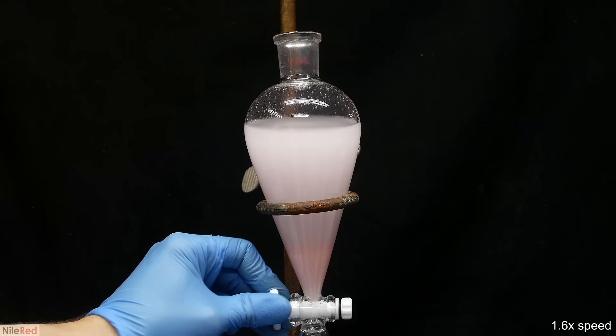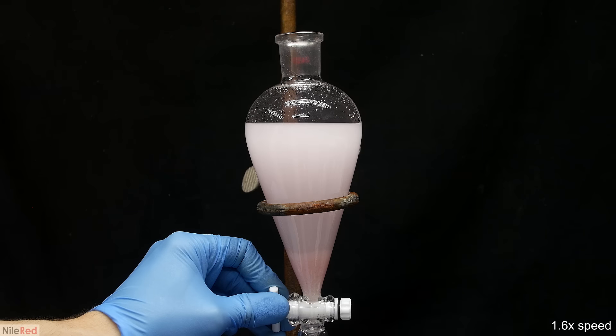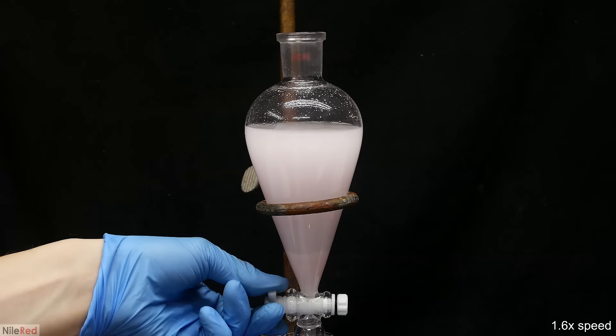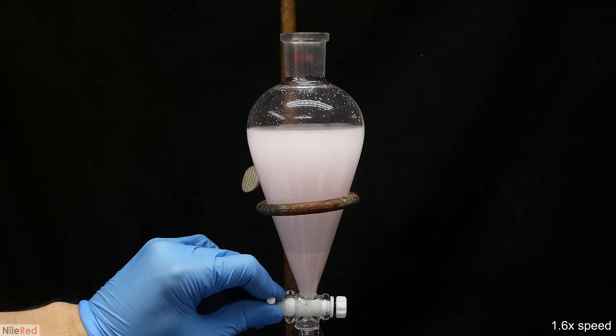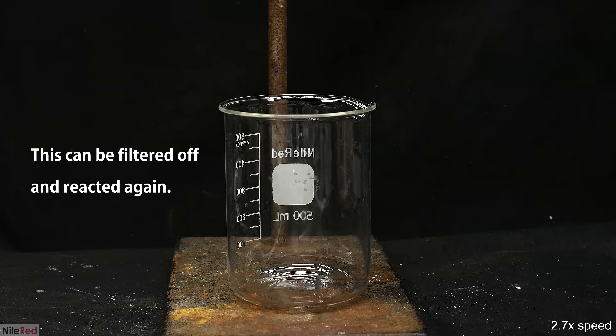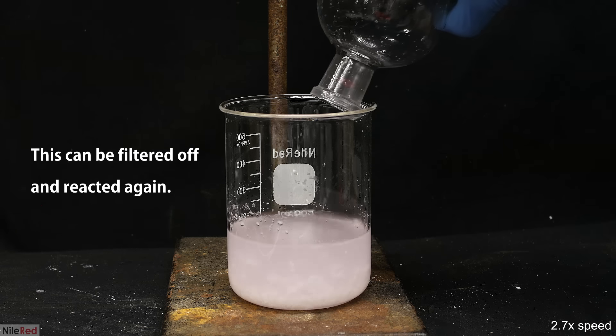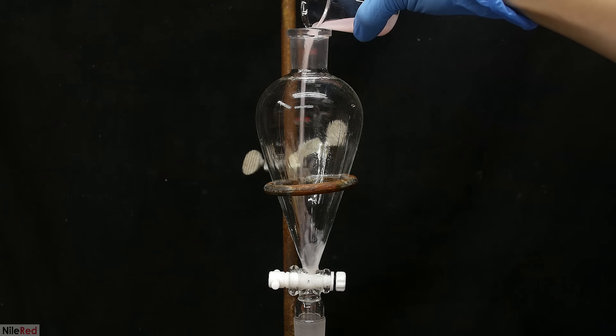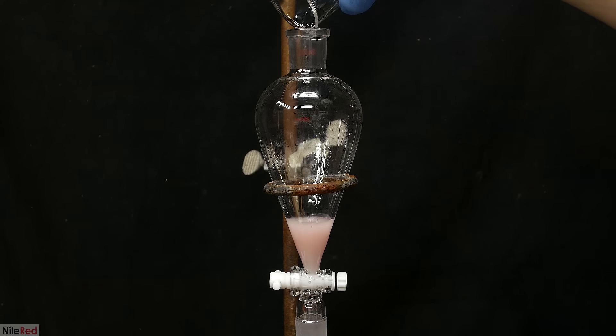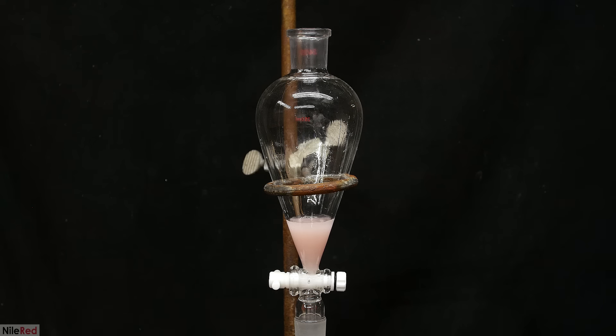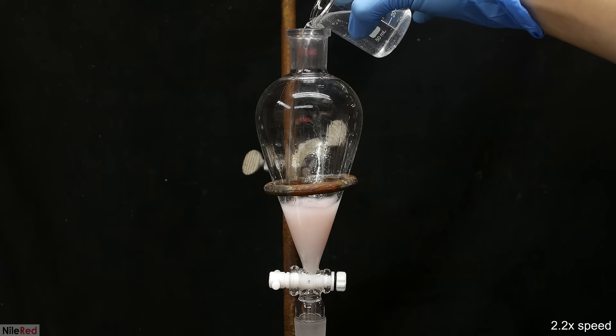I come back about 20 minutes later, and it's kind of hard to see here, but there is a lower layer that has formed. So this lower portion is drained into a small beaker, and the rest is dumped off as waste. The separatory funnel is washed, and the crude wintergreen is re-added.